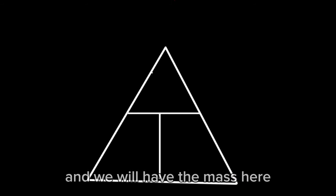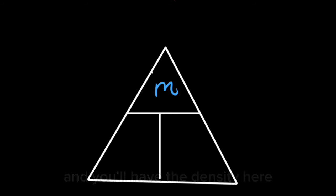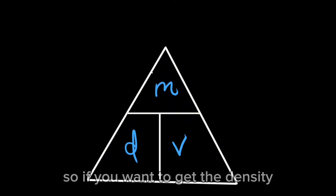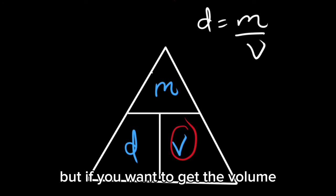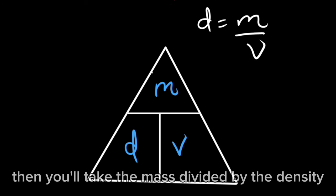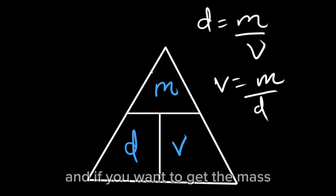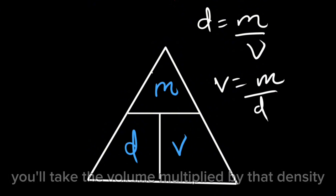We will use a triangle here. We will have the mass here, the density here, and the volume here. If you want to get the density, you'll take the mass divided by the volume. If you want to get the volume, you'll take the mass divided by the density. And if you want to get the mass, you'll take the volume multiplied by the density.